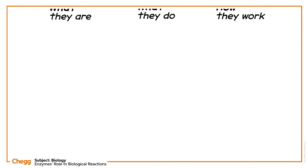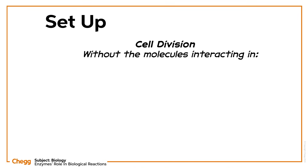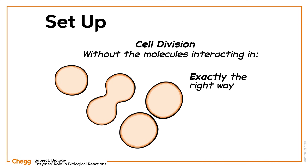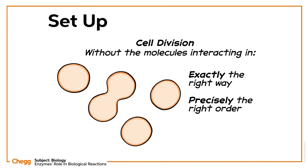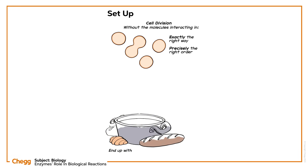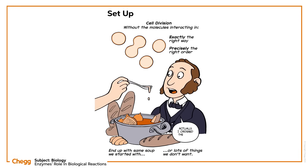Think of any biological process — let's take cell division as an example. Without the molecules interacting with each other in exactly the right way and changing in precisely the right order, the reaction either can't happen or goes haywire. We either end up with the same soup we started with, or we end up with lots of things we don't want. So how do biological processes function in the right order, at the right times, and between the right molecules?